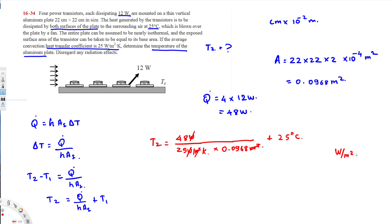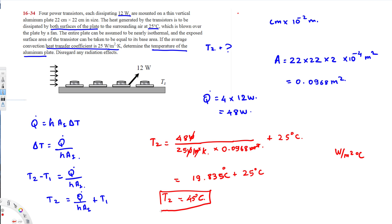The units work because watts per meter squared Kelvin is the same as watts per meter squared degree Celsius — when we use delta T, Kelvin and degree Celsius are equivalent. When finding the actual temperature the answer is in degrees Celsius. Calculating gives 19.835, and adding 25 degrees Celsius gives us approximately 45 degrees Celsius. That is the final temperature of the aluminum plate.